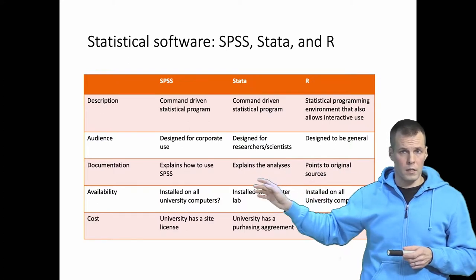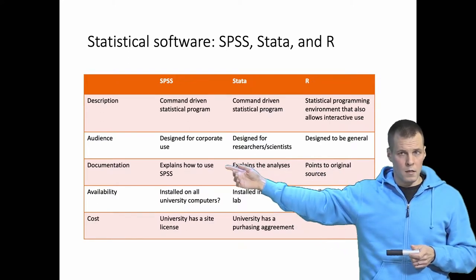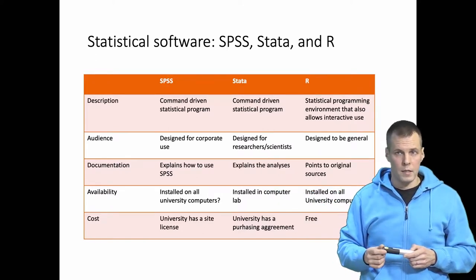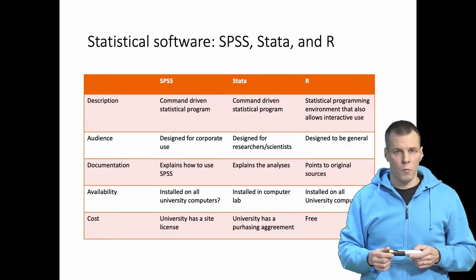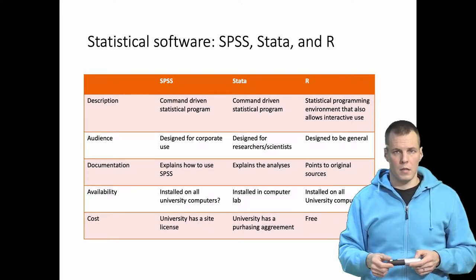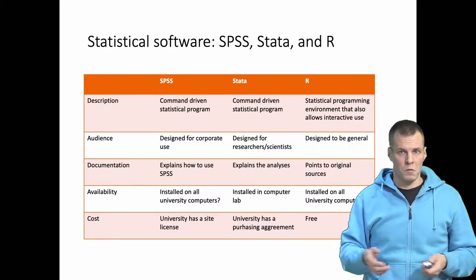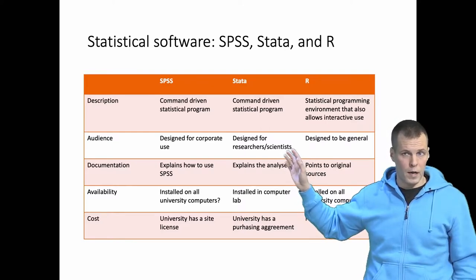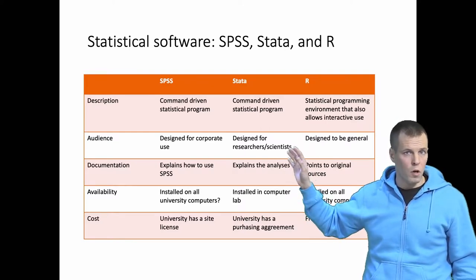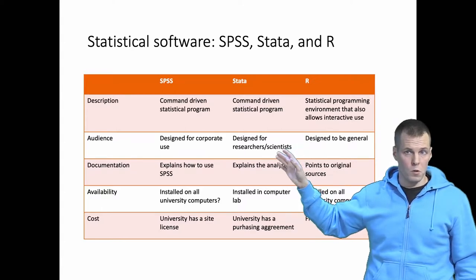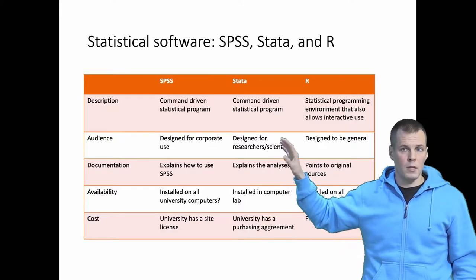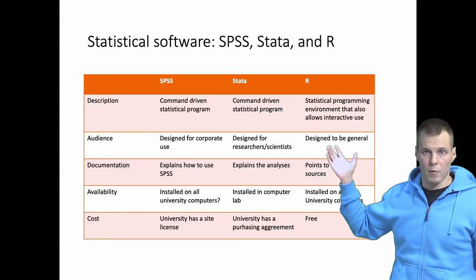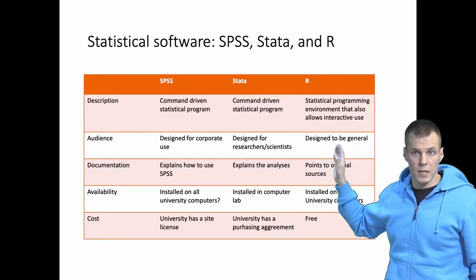These software also have different target audiences. SPSS is owned by IBM and their main market is corporations — they target marketing departments with analysis techniques relevant for marketing like customer segmentation. Stata was developed first by someone with a university background and is focused on social sciences and nowadays life science research as well — it's specifically designed for university researchers. R is a programming environment designed to be very general without any specific target audience.